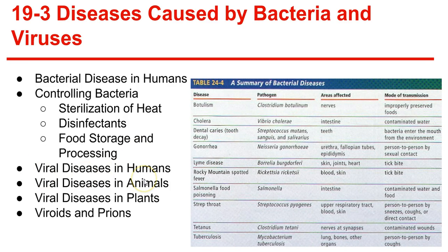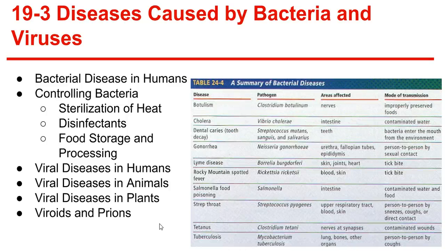Viral diseases in humans. Like bacteria, viruses produce disease by disrupting the body's normal equilibrium, and these cannot be treated with antibiotics. Viruses can also produce serious animal diseases. Viruses have a difficult time infecting plants due to cell walls, making it harder for them to enter the cell. A viroid is a single-stranded RNA molecule with no surrounding capsid. Prions are only the protein component, short for protein infectious particles. There is also a chart of different diseases, the pathogens that cause them, areas infected, and mode of transmission.